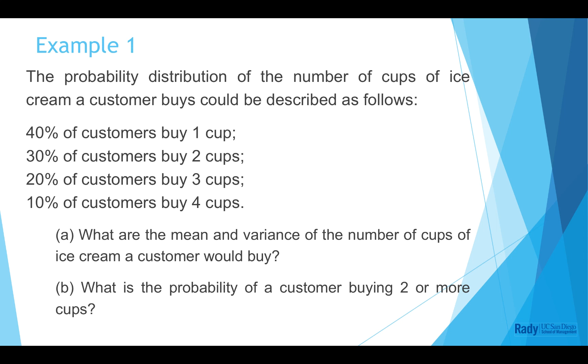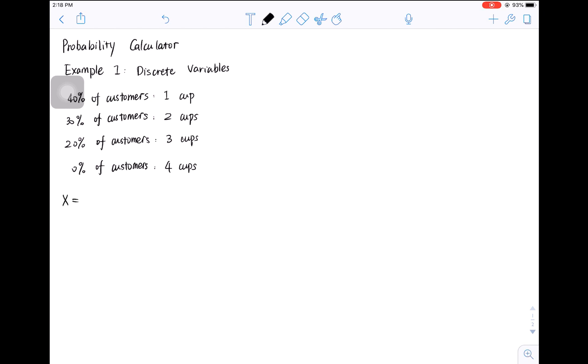First, let's quickly review how to solve it by hand. Suppose x represents the number of cups of ice cream a customer would buy. So x can be 1, 2, 3, or 4.